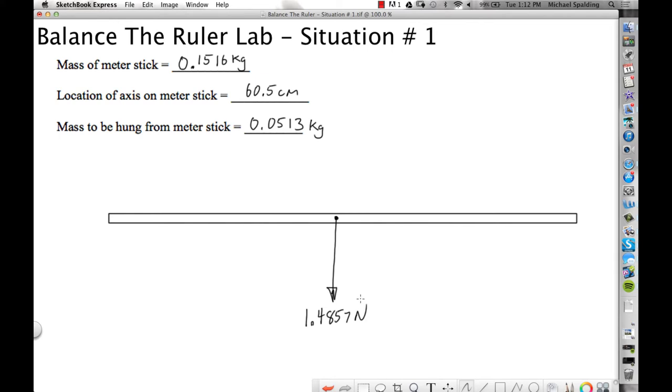There's two more forces acting on this meter stick. The axis is at the 60.5 mark. This is the 0 centimeter mark, this is the meter stick. The middle right here is the 50 centimeter mark. The axis is at 60.5, so that dot right there represents axis, and that is the 60.5 centimeter mark. And then way over here would be the 100 centimeter mark.